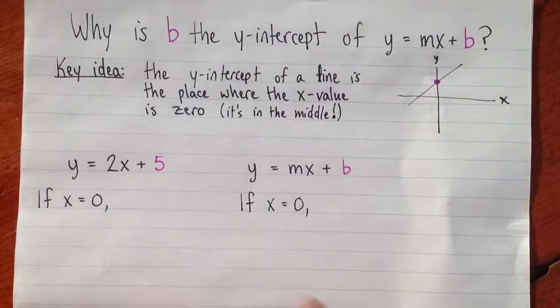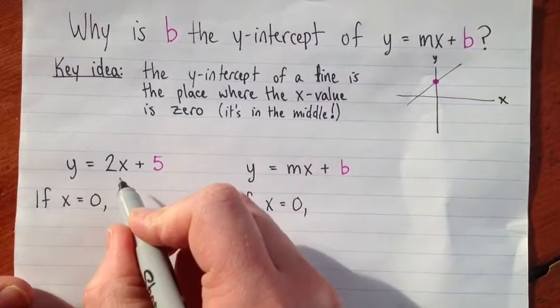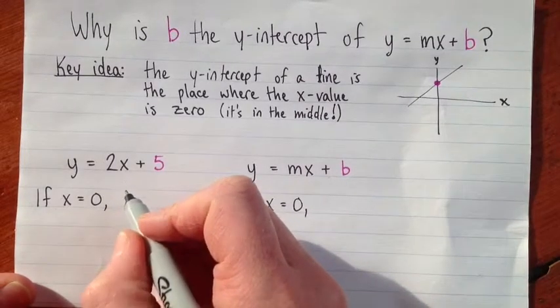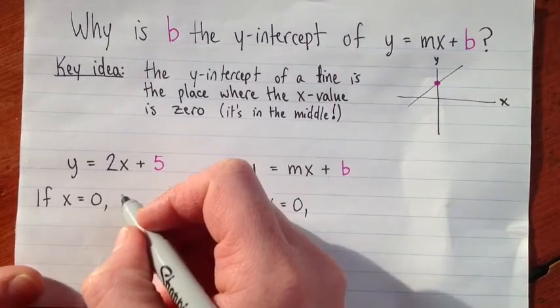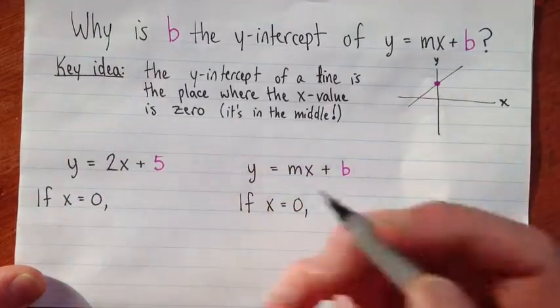So we'll look at an example first, and then I'll look at just the general form y equals mx plus b. If we had the equation y equals 2x plus 5, if we wanted to find the y-intercept, we'd substitute x equals zero, because that's the place where x equals zero.